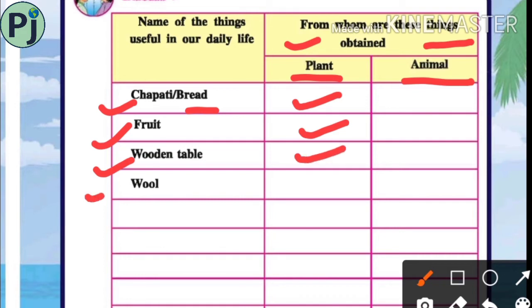Wool, which we get from sheep, which is an animal — tick on animals. Leather belt, which we get from leather — we get it from animals.